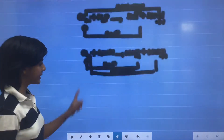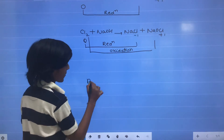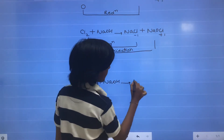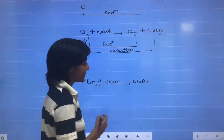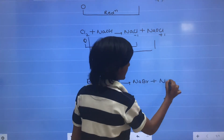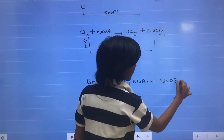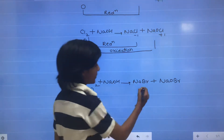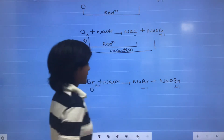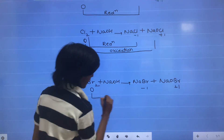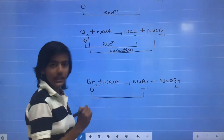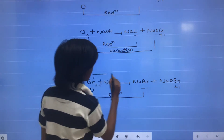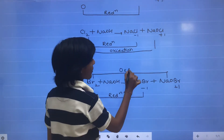Another example: when Br2 reacts with NaOH, it forms NaBr and NaOBr. The oxidation state of Br2 is 0, of Br in NaBr it is minus 1, and in NaOBr it is plus 1. So again there is a decrease in oxidation state — reduction — and an increase in oxidation state — oxidation.